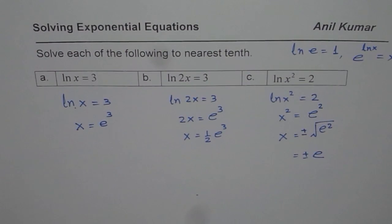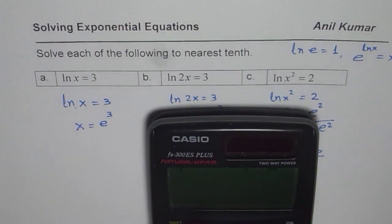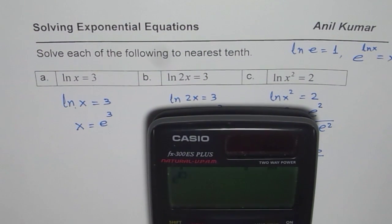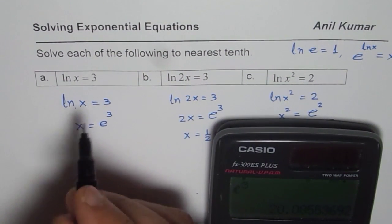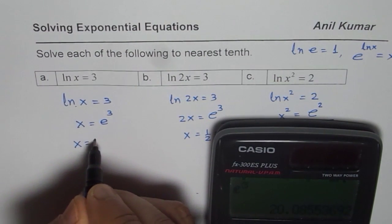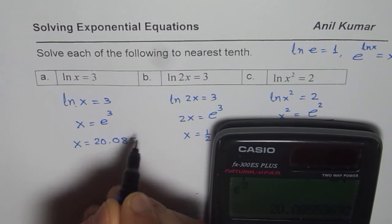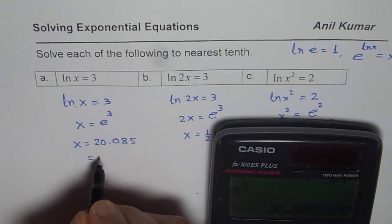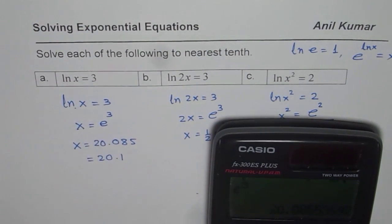Now let us use the calculator and find all the answers. You will notice that e is second function here. So you will use second function e to the power of 3 in the first case and you get your answer as 20.085. I am just rounding it to tenth place, so it is 20.1 for us.